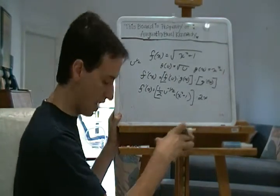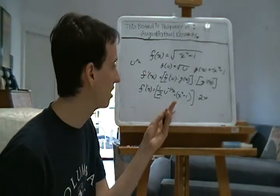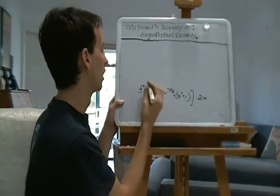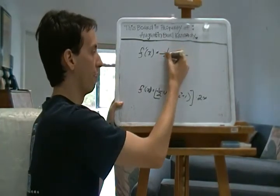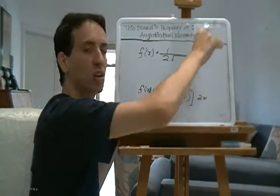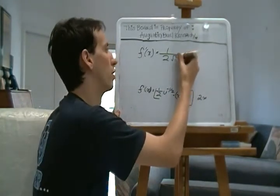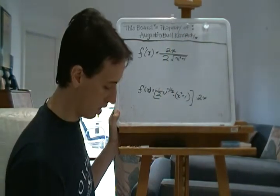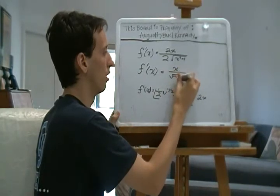Now we can write this more cleanly. f'(x) = (1/2) · (x² + 1)^(-1/2) · 2x. Since u^(-1/2) means it's in the denominator as a square root, and x² + 1 is under the radical, the 2x goes in the numerator. The 2's cancel out, so f'(x) = x / √(x² + 1).